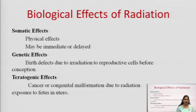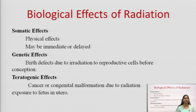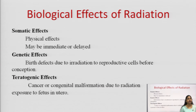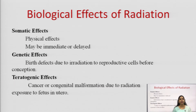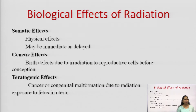Genetic effects occur when radiation affects the gene level or DNA, leading to birth defects due to irradiation of reproductive cells before conception. Teratogenic effects are those which affect the fetus in the uterus — cancer or congenital malformation due to radiation exposure to the fetus in utero.